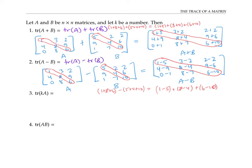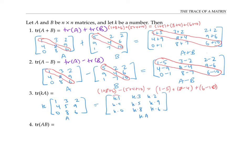Let's look at a scalar multiple k times a matrix. A scalar multiple means we multiply all entries by k. So if we want to take the trace of k times A, we're adding up those scaled diagonal entries, which is the same as adding up the original diagonal entries and multiplying by k, since multiplication is distributive. Therefore, the trace of k times A is k times the trace of A.